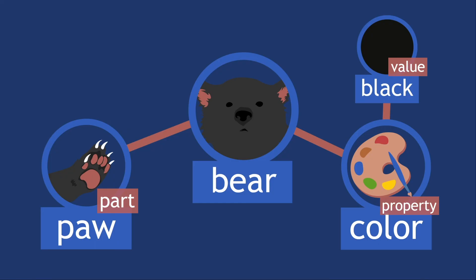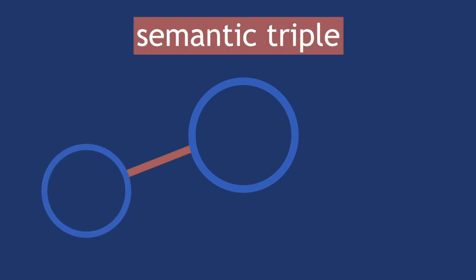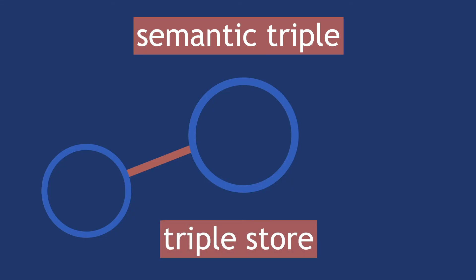This is the kind of graph to which graph databases refer. Each binary relation and the two entities x and y connected by it is called a semantic triple. They are the type of triple that is being stored in specialized databases called a triple store. These triples can be connected whenever they share an entity in common. This is how graph databases are constructed from semantic triples.